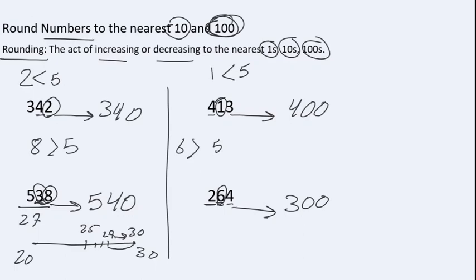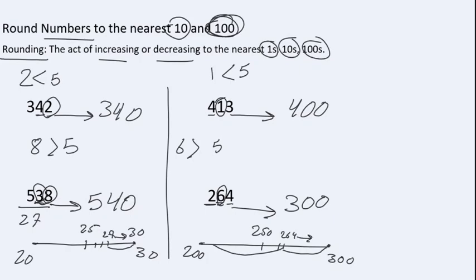We say that two hundred sixty-four is close to three hundred. On a number line, two hundred is on one end and three hundred is on the other end, with two hundred fifty in between. Two hundred sixty-four is somewhere past the midpoint, and we see that it is closer to three hundred rather than two hundred. So we say that two hundred sixty-four is almost three hundred. This is the logic behind rounding to the nearest tens and to the nearest hundreds.